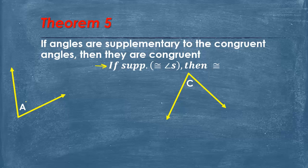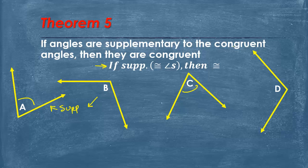So let's say we have angle A and angle C, and we know that they're congruent. And we know that angle B is supplementary to angle A, and we know that angle D is supplementary to angle C. So because angle A and angle C are congruent, then angle B must also be congruent to angle D. Hopefully that makes sense.